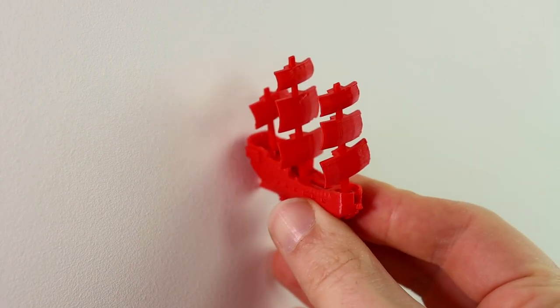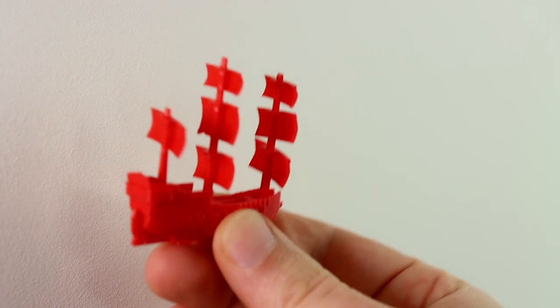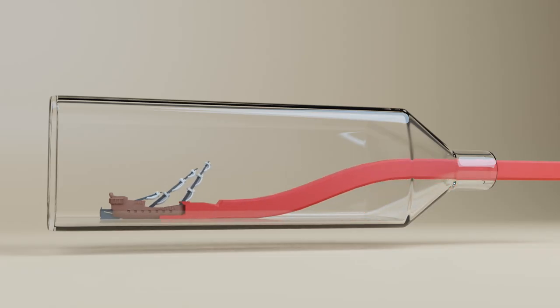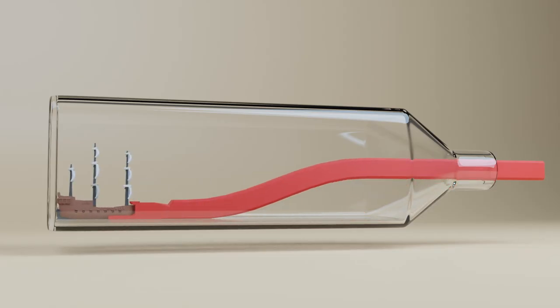You see, if we push the ship against a flat surface, like in this case a wall, then we can easily unfold the ship again. So in other words, I had to design a simple stick to push the ship against the back of the bottle. And this is what I came up with.